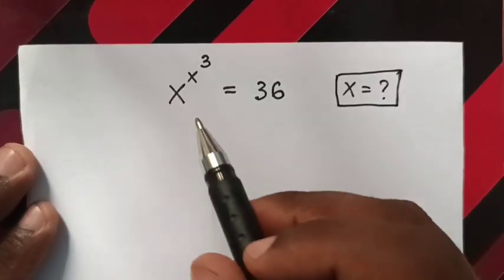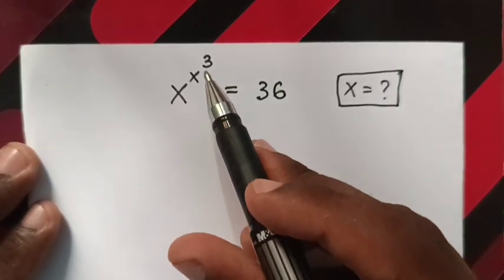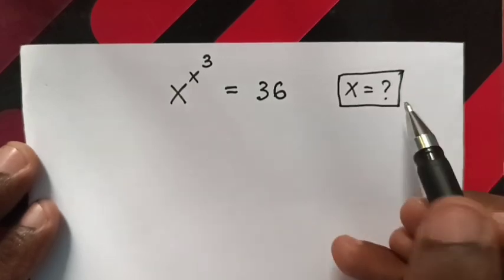Hello, how to solve x^(x^3) = 36 to find the value of x.